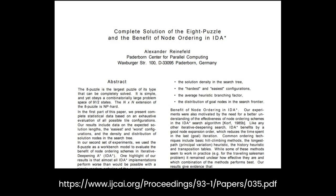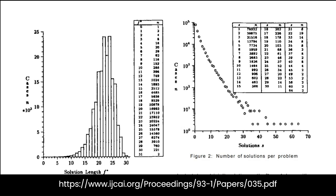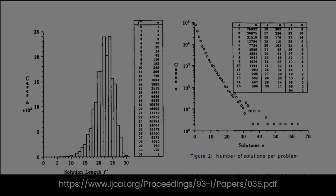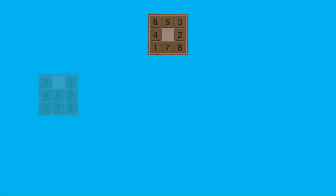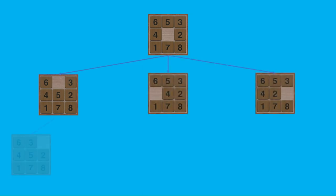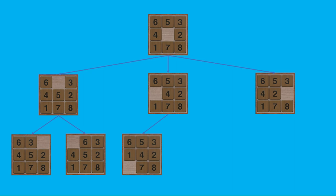Alexander Reinfeld from the Paderborn Center for Parallel Computing, Germany, demonstrated that the average length of all optimal solution paths is approximately 22 moves for any random configuration. Across the 181,440 solvable configurations, there are a total of 500,880 optimal solutions, providing an average solution density of 2.76 solutions per problem, with the range of solutions varying from 1 to 64. The difficulty involves building the potential search tree and determining the most efficient path from the initial state to the goal state.